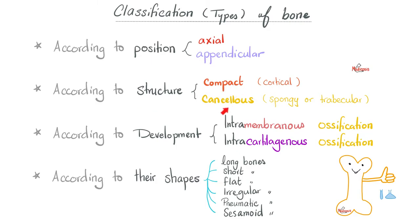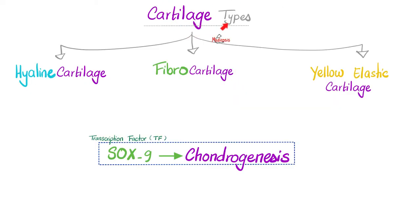Bones had many types depending on the classification. Based on the structure, we had compact and cancellous bones. Based on their shapes, we have long bones, short bones, flat bones, irregular bones, pneumatic bones, and sesamoid bones. Remember that your skull bones are flat bones. Most of them ossified via intramembranous ossification. As for cartilages, they have three types: hyaline cartilage, fibrocartilage, and yellow or elastic cartilage.